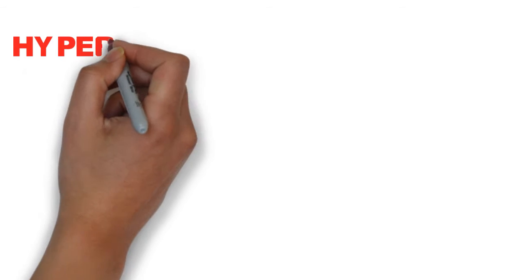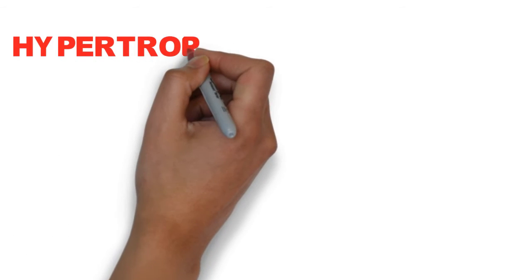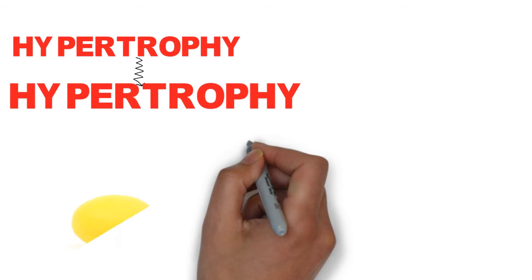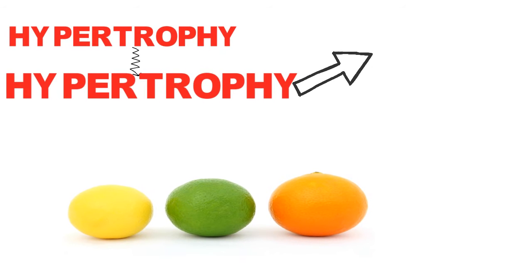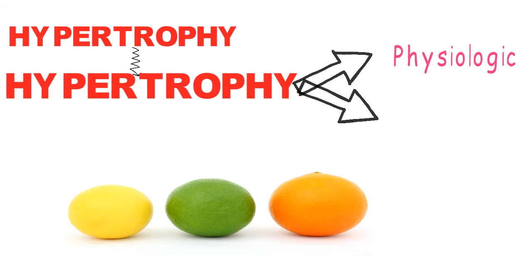The first cell adaptation is hypertrophy. So to define hypertrophy, hypertrophy is increase in size of the cells leading to increase in size of the affected organ. Based on the cause, we divide hypertrophy into physiological hypertrophy and pathological hypertrophy.